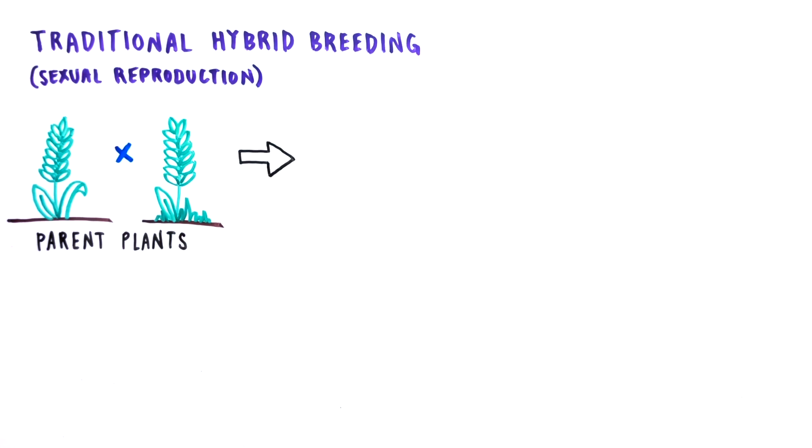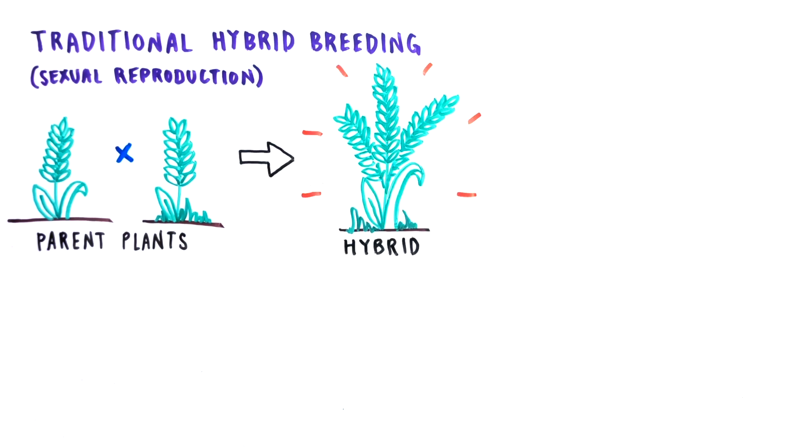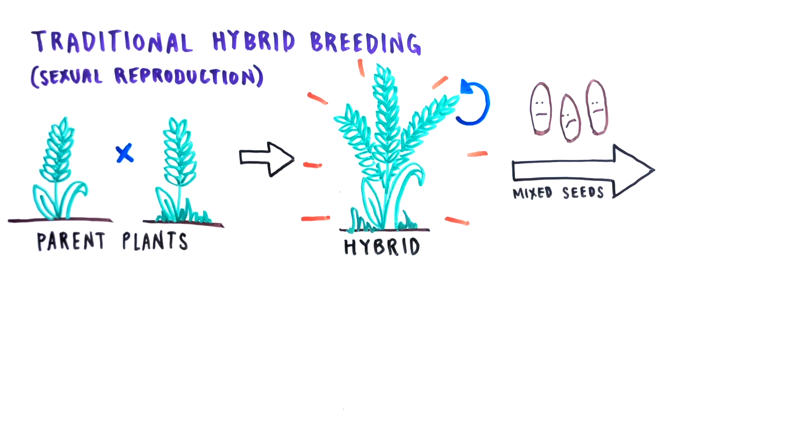we can generate seeds that grow into a so-called hybrid plant that grows even better. For some crops, the hybrids can produce double the yield. Unfortunately, when the hybrid plant self-fertilizes or is bred with an identical hybrid plant, its seeds will produce plants with lower yield. This is why farmers have to buy new hybrid seeds every year.